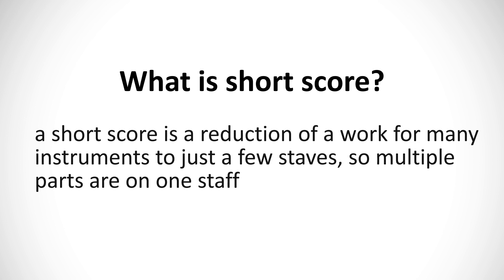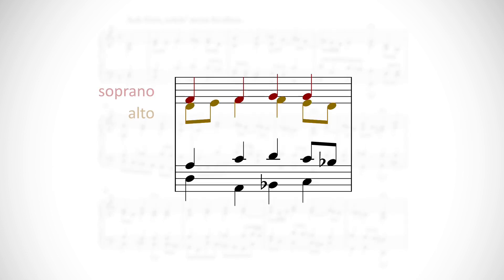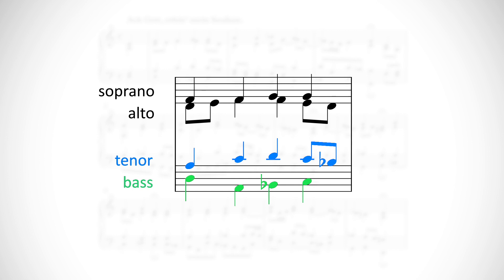An opera, for instance, may be written first in a short score, then in full score, and then again reduced to a vocal score for rehearsals. In choral music, like the type we're going to look at in this lesson, a short score usually has the sopranos and altos sharing the top staff, and the tenors and basses sharing the bottom staff. The voices are differentiated using stem direction — sopranos and tenors have stems going up, and altos and basses have their stems going down.